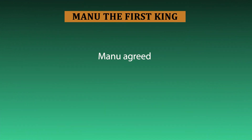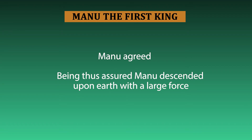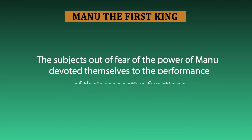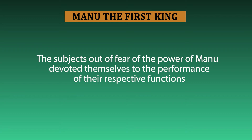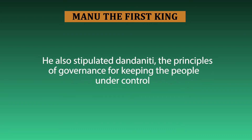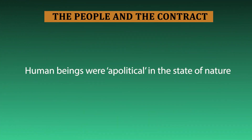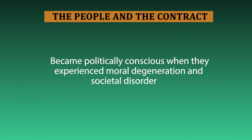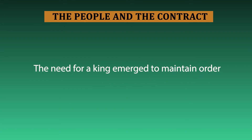Manu finally agreed. He descended upon earth with a large force. The subjects, out of fear of Manu, started obeying the laws and followed their respective functions. Manu laid down dandaniti — principles of governance for keeping the people under control. From this theory we can deduce that people in the state of nature were essentially apolitical. However, political consciousness dawned with the moral degeneration of society. The need for a king emerged to maintain societal order, and all this happened only after the creation of the family and property.